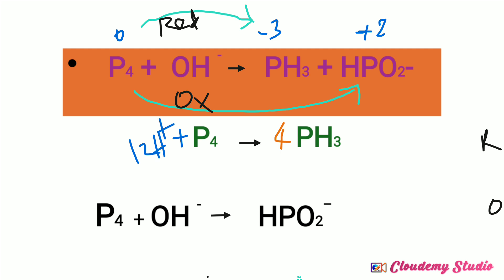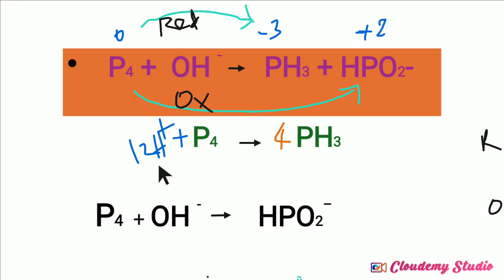12 hydrogen ions are added on the left-hand side. Now we check the charges: the right-hand side has a total charge of zero since phosphine is neutral. On the left-hand side, the 12 hydrogen ions give a charge of 12 plus. To balance this, we add 12 electrons on the left-hand side. The 12 minus and 12 plus cancel, so there is no charge on either side, and the reduction half-reaction is balanced.